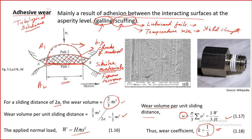For example, on a bolt, material has been removed, and if you look at adhesively worn surfaces you will see large chunks of material coming out. This is visible in a SEM (scanning electron microscope) picture.